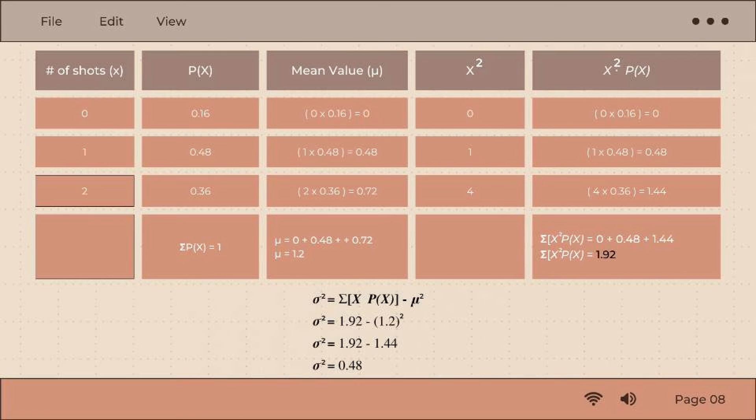So 0 plus 0.48 plus 1.44 equals 1.92. To get the variance, we are going to use the formula and substitute the values. So variance equals 1.92, which is the sum we got from earlier, minus 1.2 squared, which is the mean.